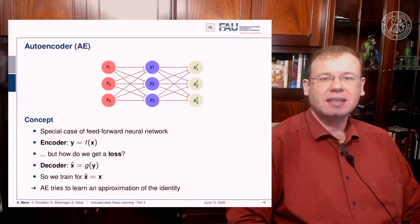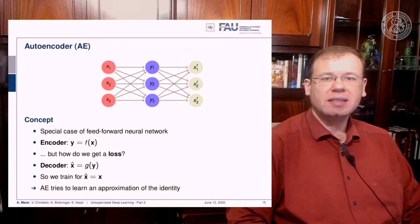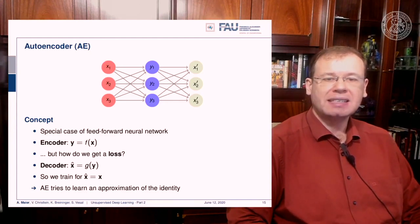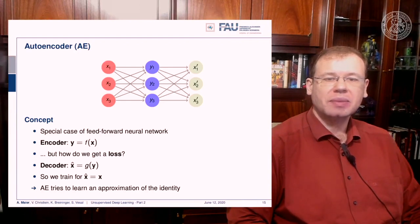Now the problem is how can we generate a loss in such a constellation, and the idea is rather simple. We add an additional layer here on top, and the purpose of the layer is to compute a decoding. So we have another layer that is g of y and g of y produces some x hat. And the loss that we can then define is that x hat and x need to be the same. So the autoencoder tries to learn an approximation of the identity.